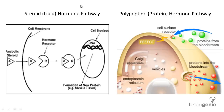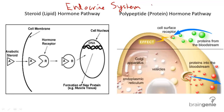Hormones are a central part of endocrine system function. It is how endocrine system glands report messages to and from different parts of the body, and they work closely with another system — the nervous system.